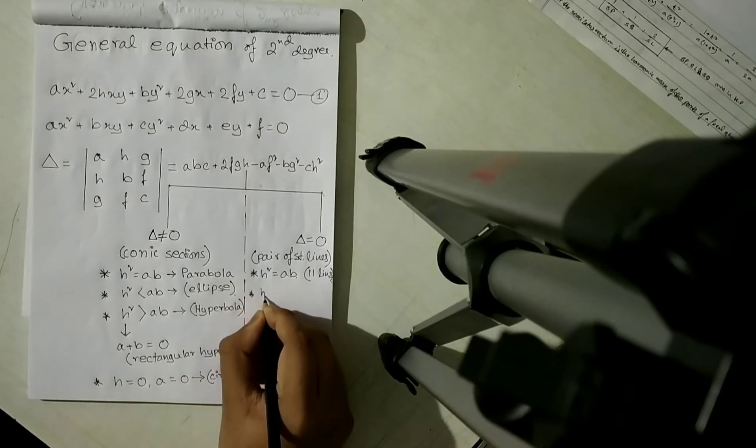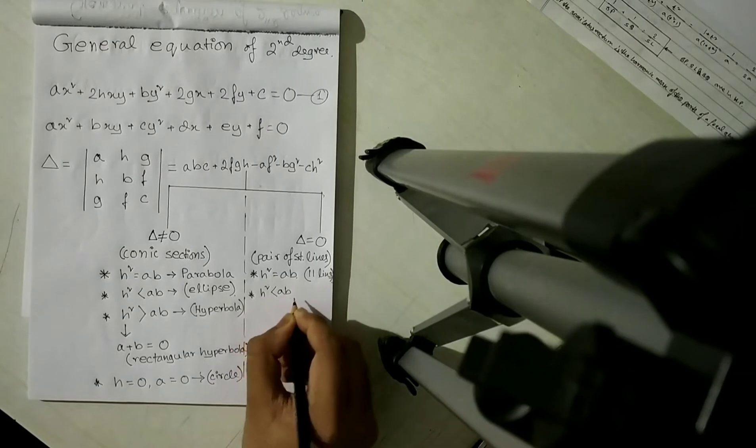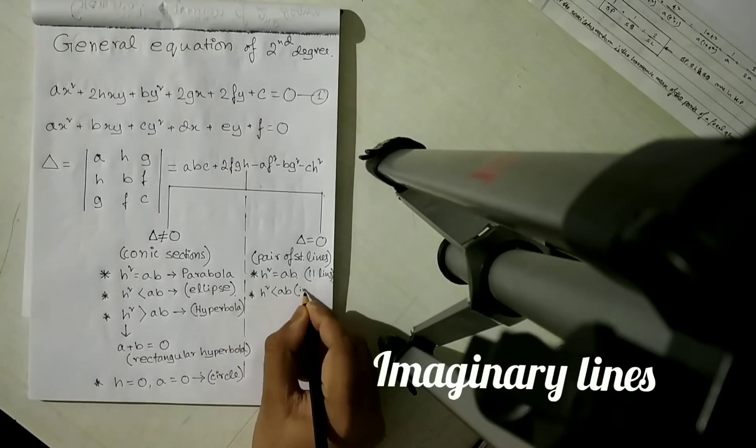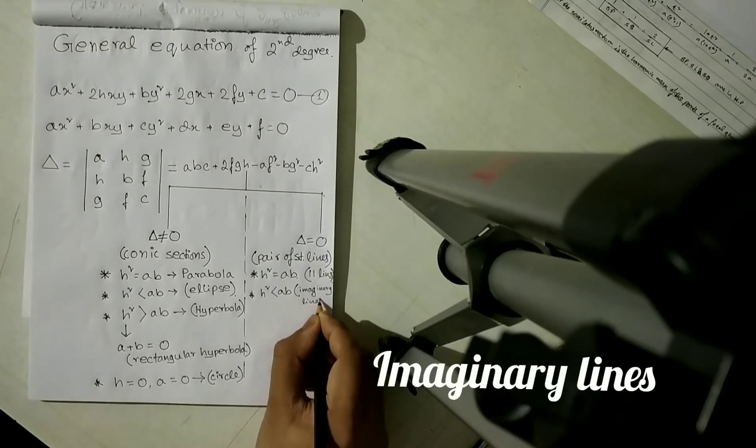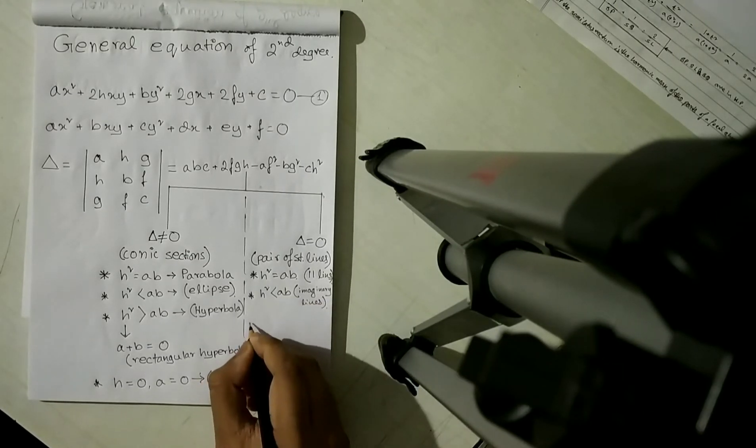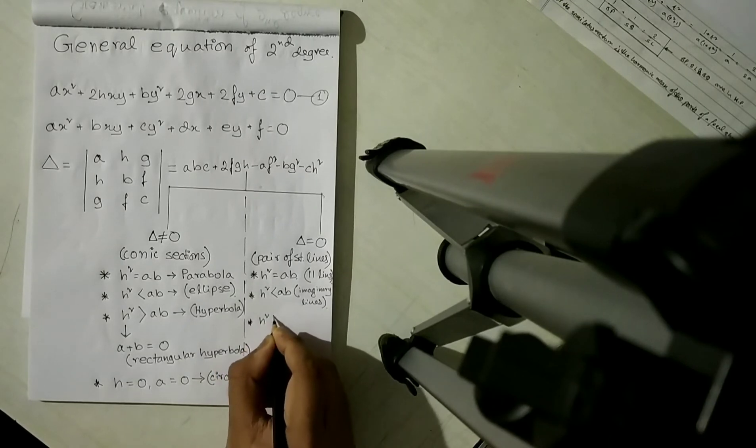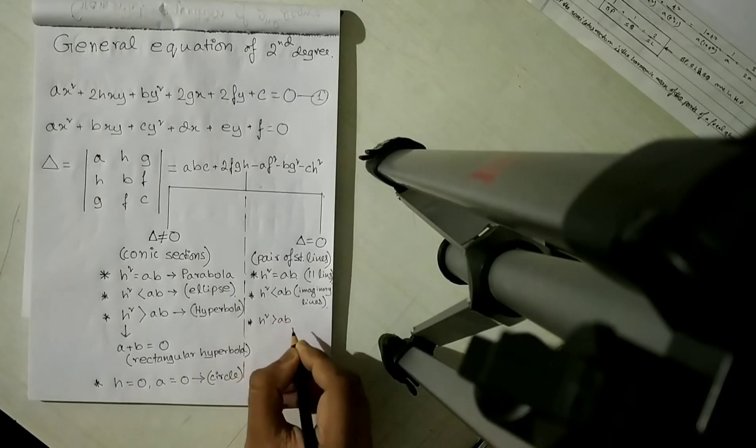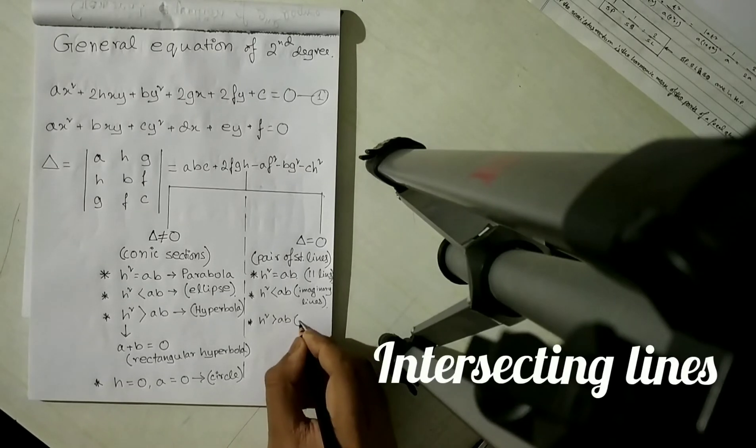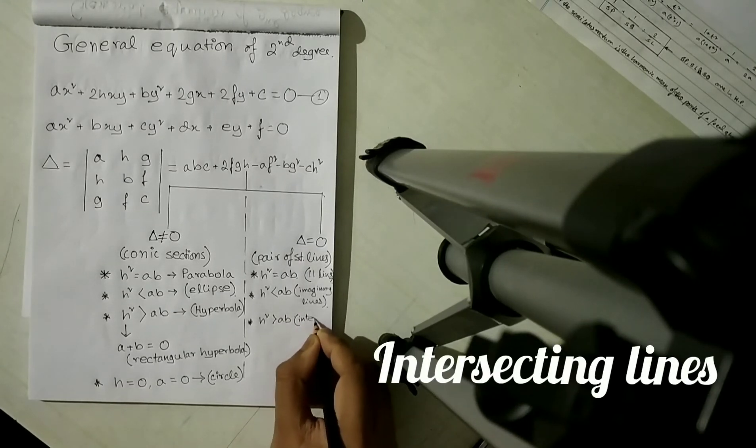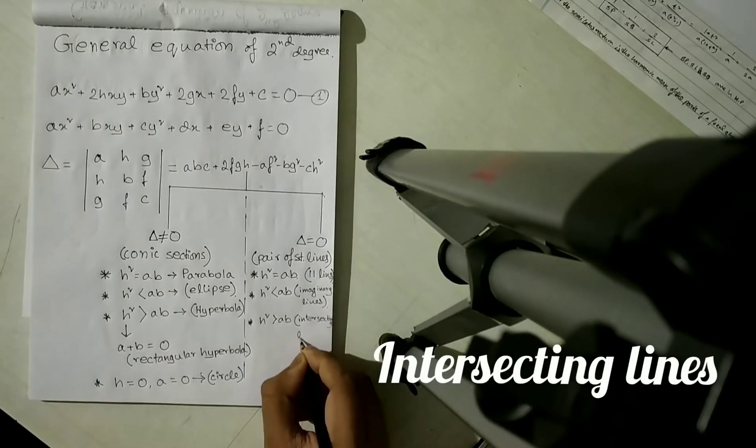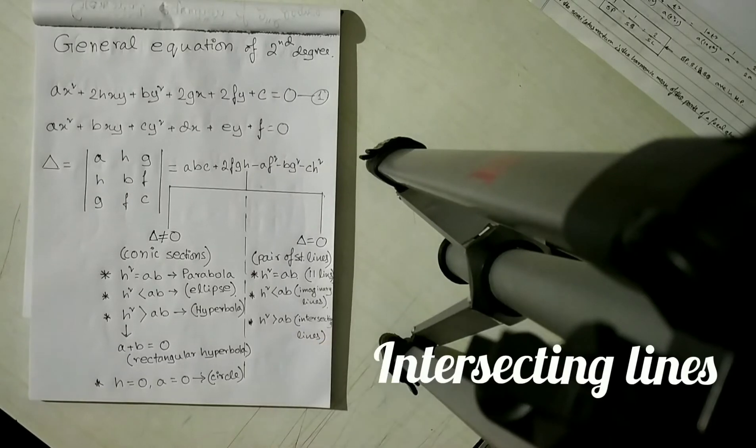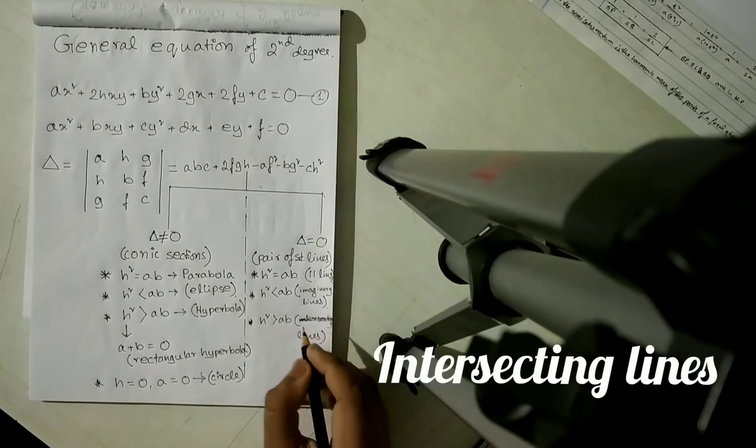Next, if h² is less than ab, it symbolizes imaginary lines. Then, if h² is greater than ab, it symbolizes intersecting lines. This is intersecting lines, I'll just rewrite it for you.